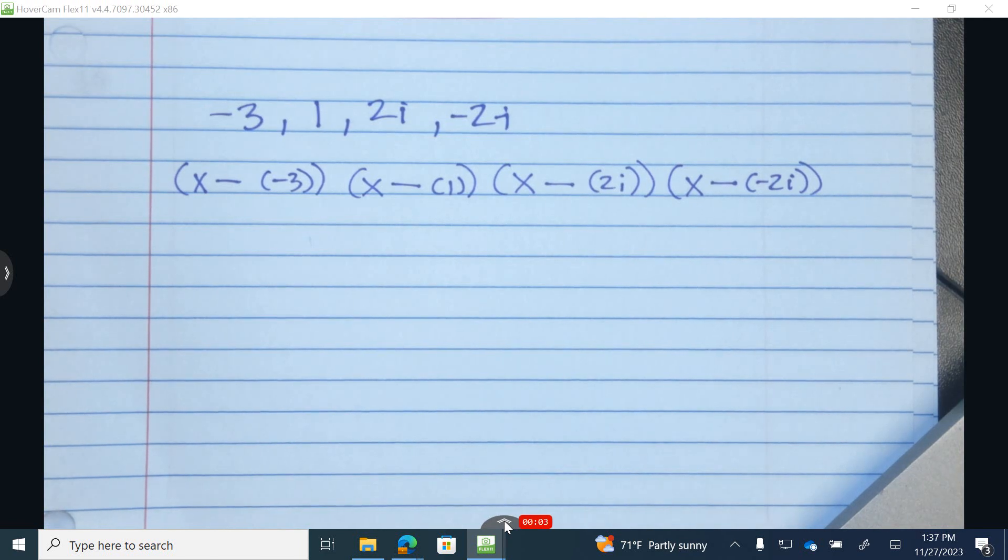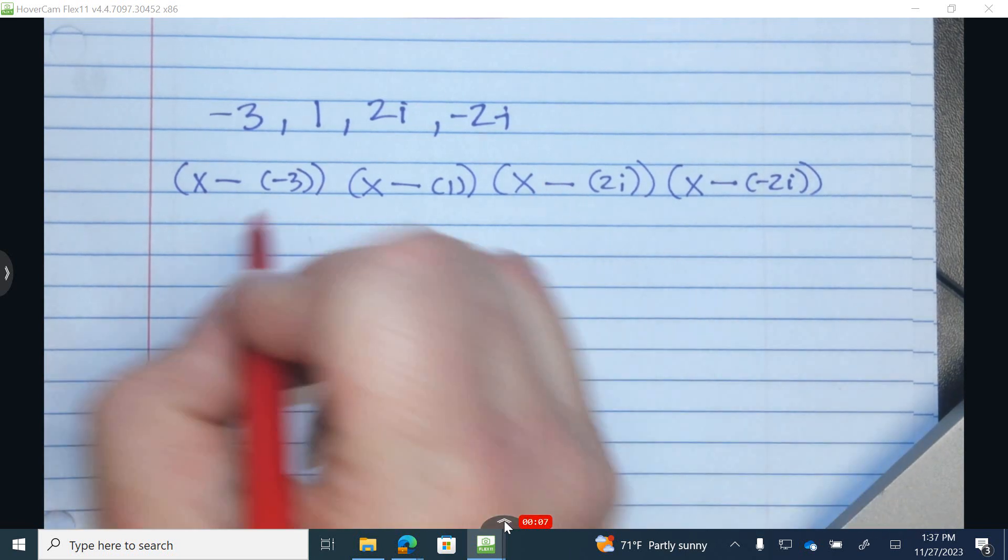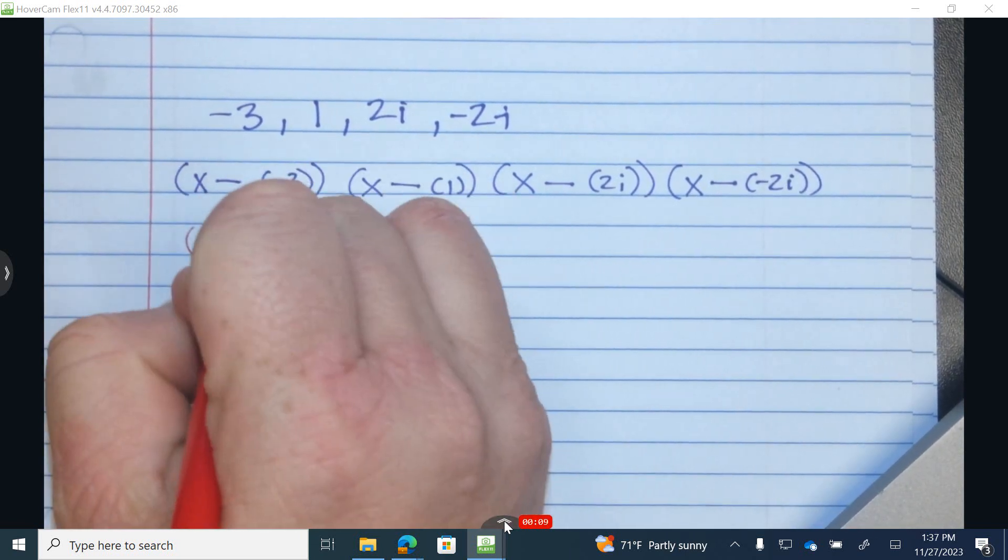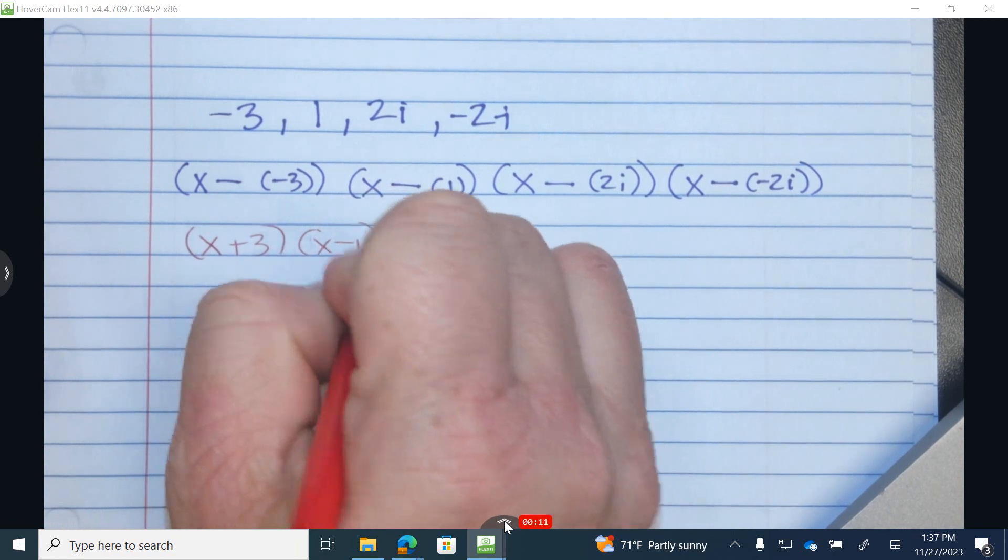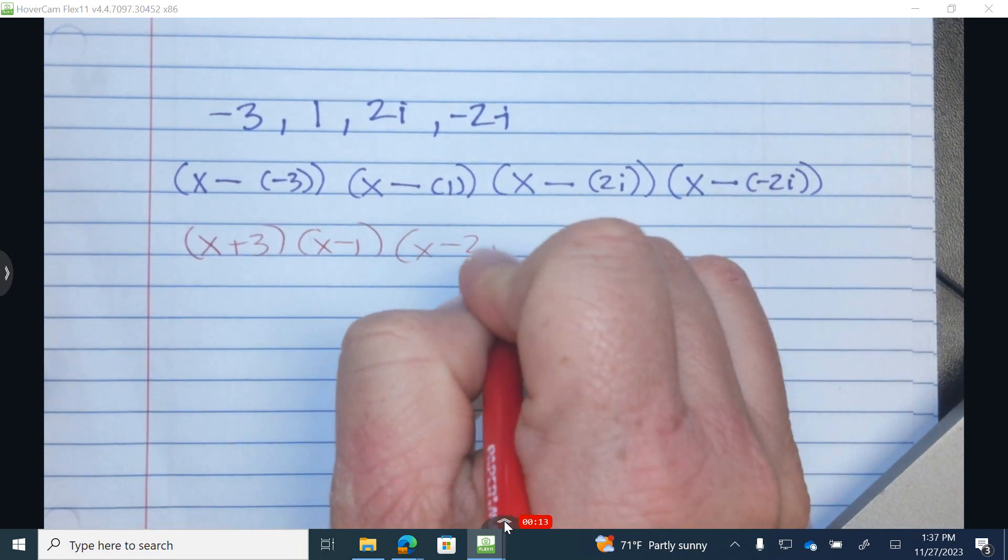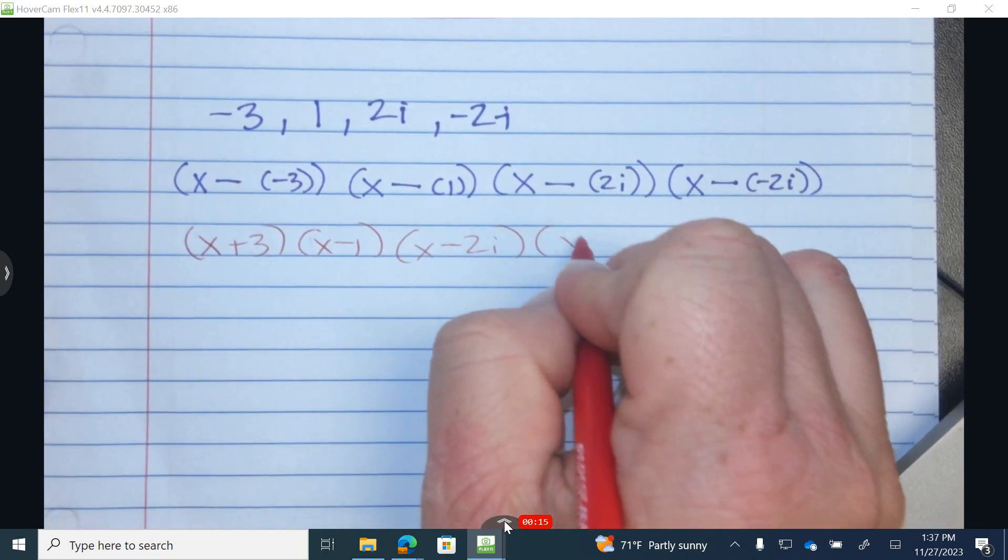Let's look right now at number 12 from the Fundamental Theorem of Algebra, and I'm going to rewrite these as x plus 3, x minus 1, x minus 2i, and x plus 2i.